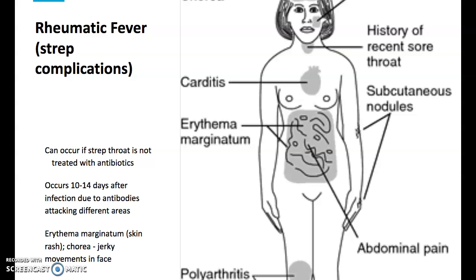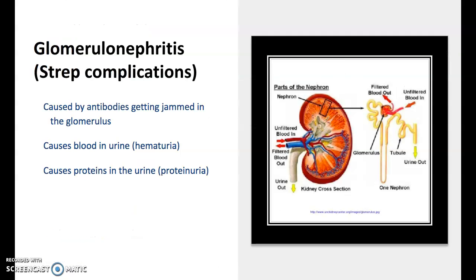If you don't take antibiotics for strep, you have a greater risk of complications. Rheumatic fever is one — this usually happens about two weeks after the strep throat began, because antibodies build up and, in an almost autoimmune situation, will attack some of our joints and different organs. Another complication is that those antibodies can damage the delicate capillaries in our kidneys called glomeruli, causing glomerulonephritis — inflammation of the glomeruli in the kidney. These are complications that can occur several weeks after strep throat, especially if you don't treat it with antibiotics.